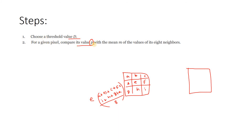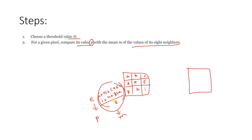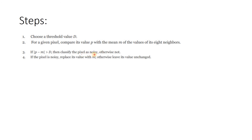To summarize the steps: choose a threshold value D. For a given pixel P, compare it with M — the average value of its 8 neighbors. If the absolute difference |P - M| is greater than D, we consider that a noisy pixel or outlier and replace it with the average of its 8 neighbors. Otherwise, keep it unchanged. That is how we treat outliers, and that is the same way we are going to remove salt and pepper noise from an image.